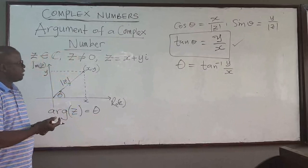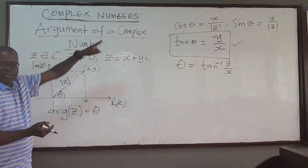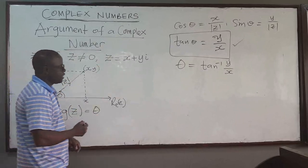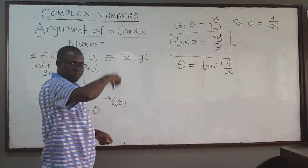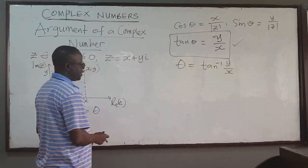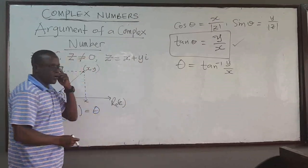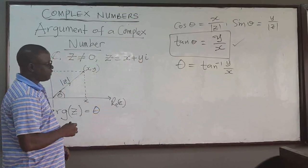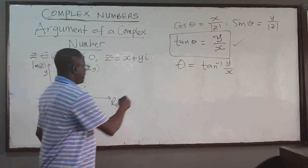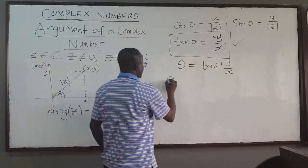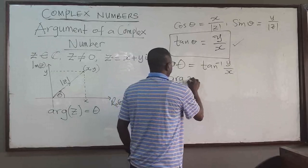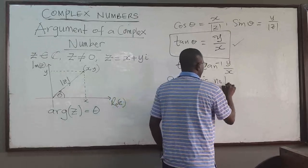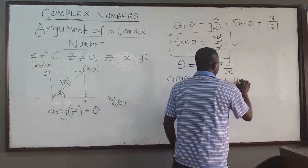Note that cosine and sine are 2π-periodic — they repeat every 2π radians, or 360 degrees. Because of that, the argument of the complex number is often not unique. It is not unique.